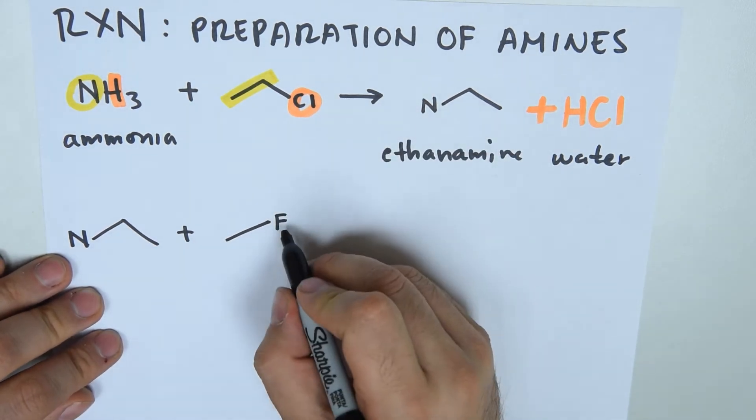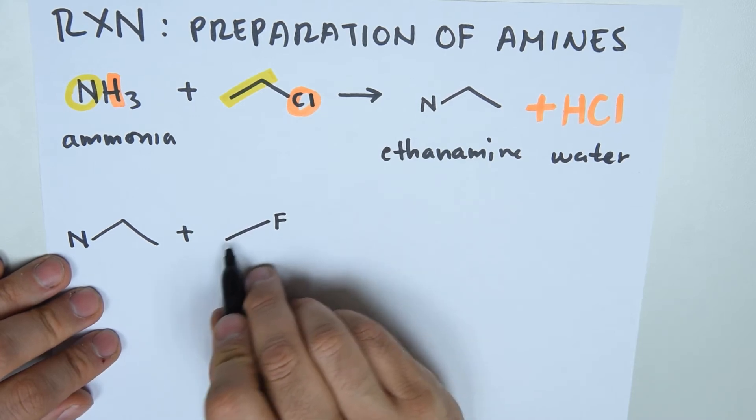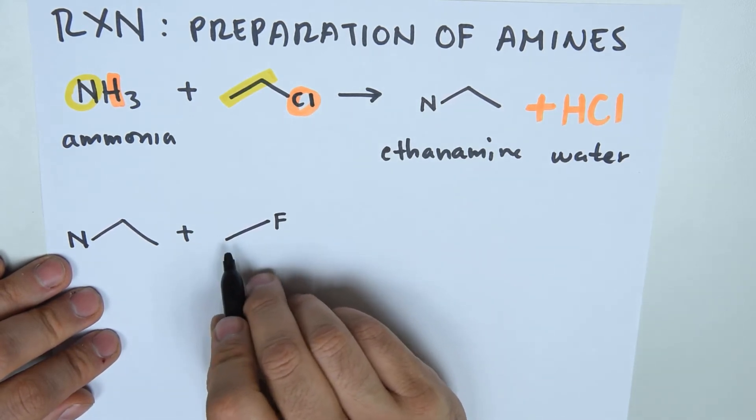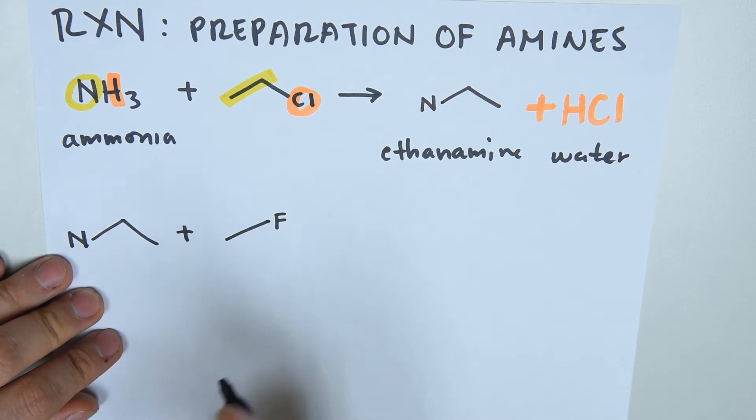So we have the halogen here and we have the carbon chain, which is only one carbon. So they're going to flip, they're going to switch.